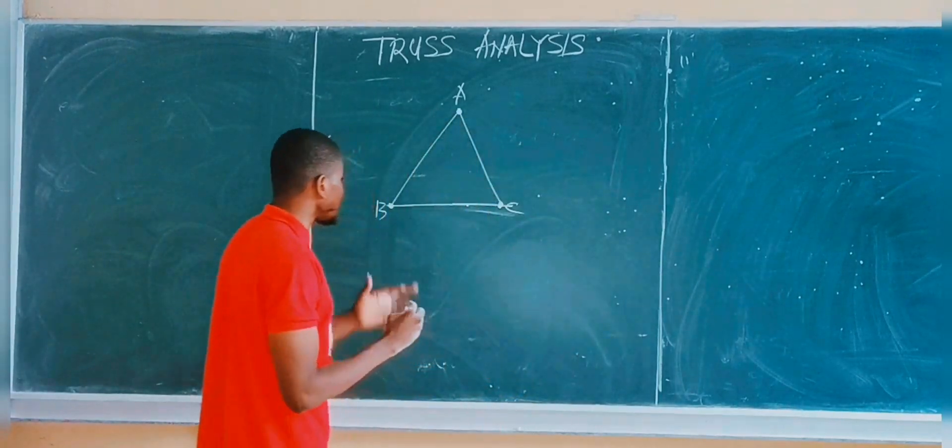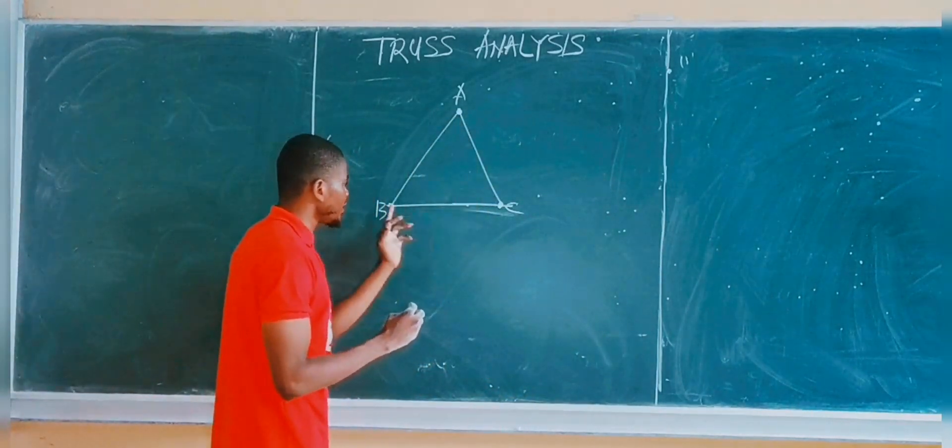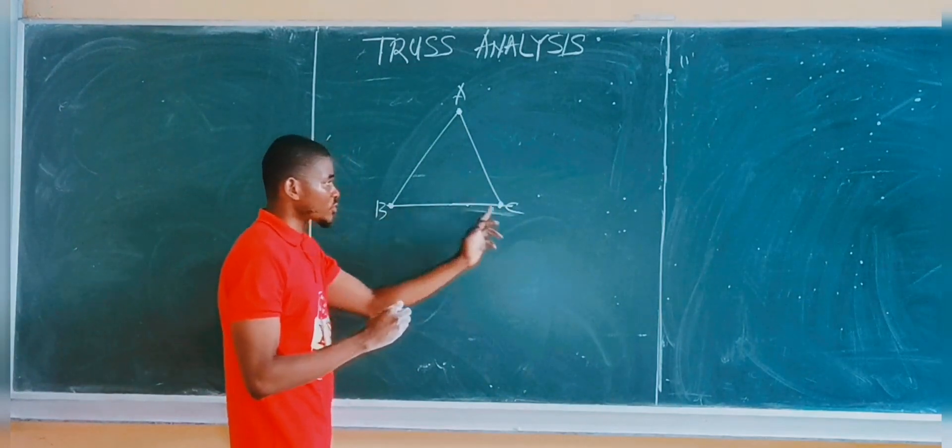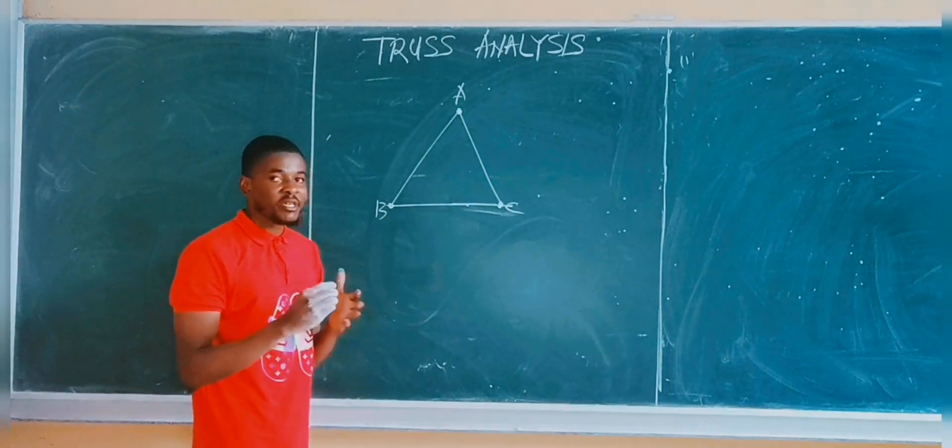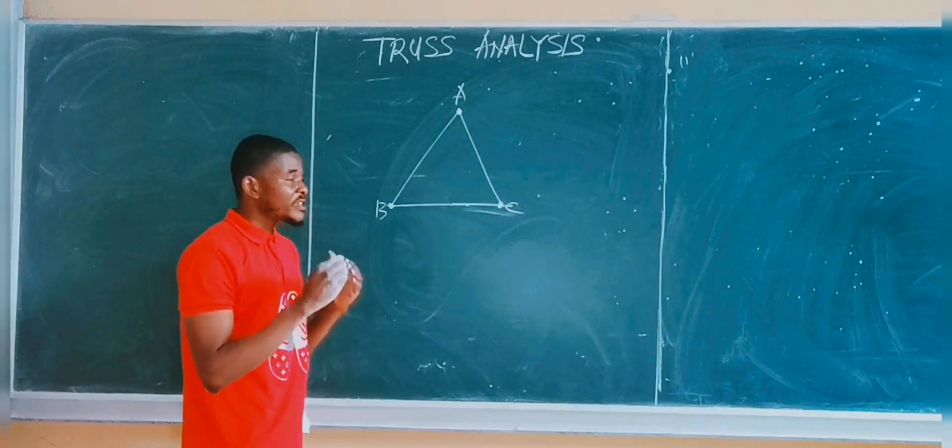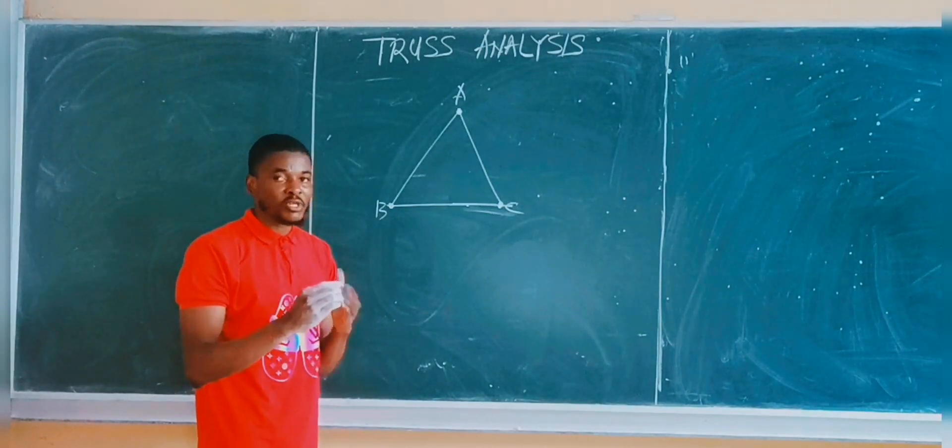For instance, if I consider joint B to joint C, this is a truss member from B to C. The load carried by this member of a truss system is equal and opposite in direction.